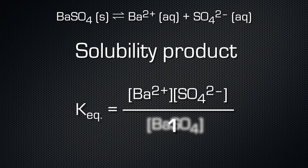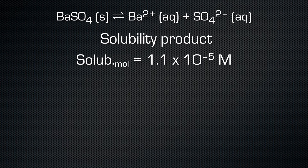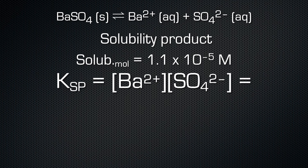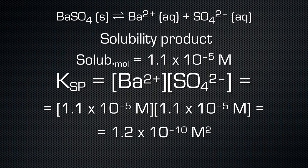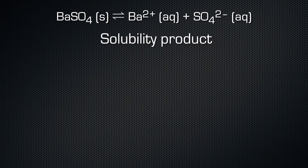We need the concentrations of the dissolved ions from a saturated solution to calculate the solubility product. The molar solubility of barium sulfate is equal to 1.1 × 10⁻⁵ moles per liter. Each barium sulfate particle that dissolves yields 1 barium ion and 1 sulfate ion. If we dissolve 1.1 × 10⁻⁵ moles in 1 liter of water, we get the same amount of each ion. The solubility product consists of the product of the ion concentrations raised to the power of their stoichiometric factor.